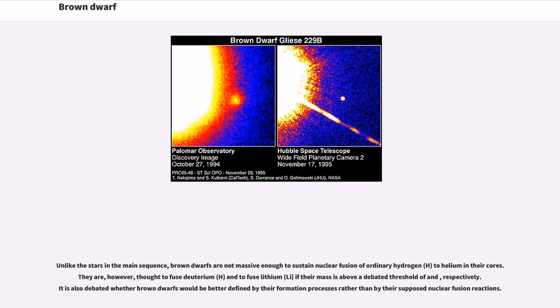Unlike stars in the main sequence, brown dwarfs are not massive enough to sustain nuclear fusion of ordinary hydrogen to helium in their cores. They are however thought to fuse deuterium and lithium if their mass is above debated thresholds.